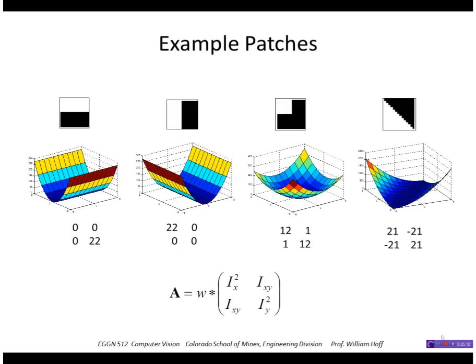Here's some simple patches, and you can see what the surface looks like. For a step edge like this, you can see we do have that uncertainty in the minimum along this direction, and this is the two by two matrix A, where we can see we have a high score in the lower right but zeroes everywhere else. Correspondingly, for a vertical step edge, I've got a high score here, zeroes everywhere else.